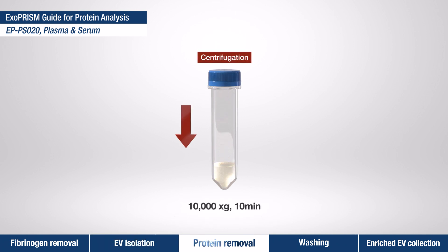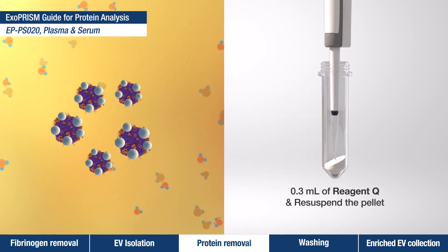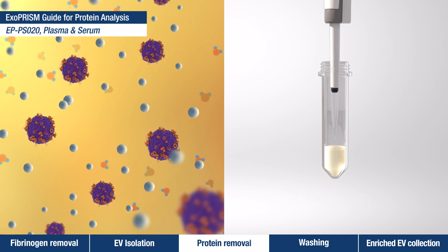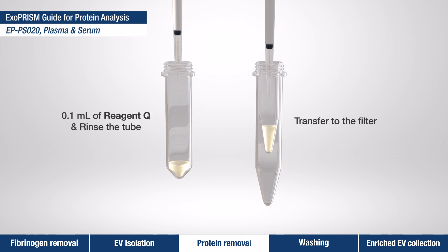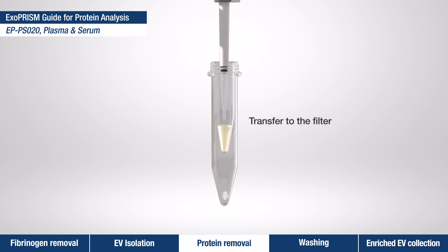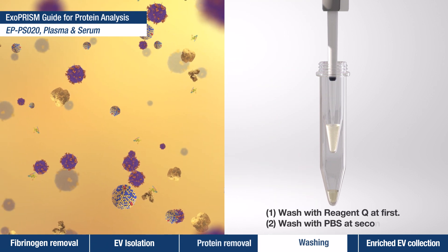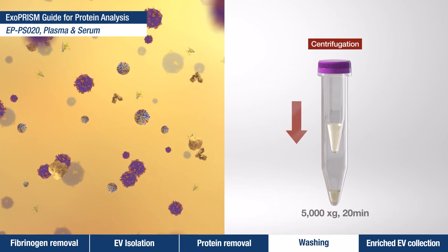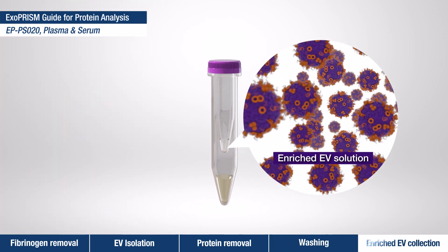Discard the supernatant containing plasma proteins. Subsequently, mix the precipitate with reagent P1 and centrifuge to eliminate the remaining supernatant. Next, resuspend the extracellular vesicle pellet with reagent Q for rinsing and transfer it to a washing filter. Centrifuge to filter out substances other than extracellular vesicles. Wash twice using reagent Q and PBS respectively. The enriched solution of extracellular vesicles is now ready for use.